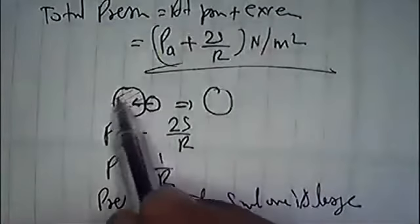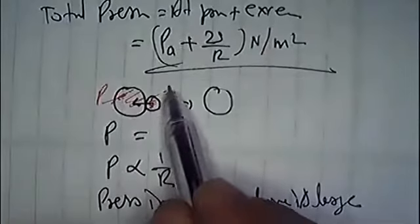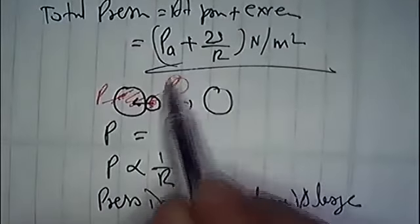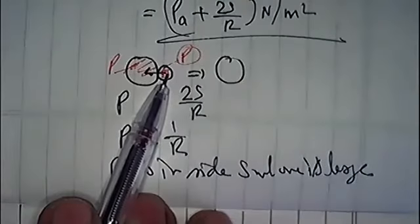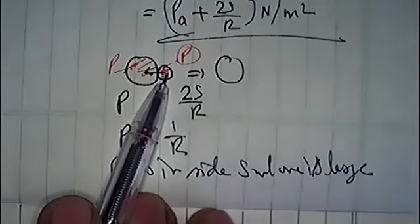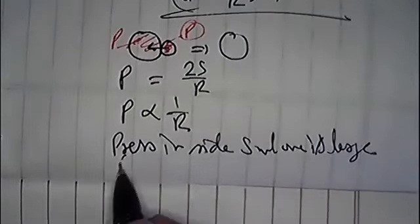In the small drop, excess pressure is more, so liquid flows from high pressure to low pressure. This is the answer you need to write.